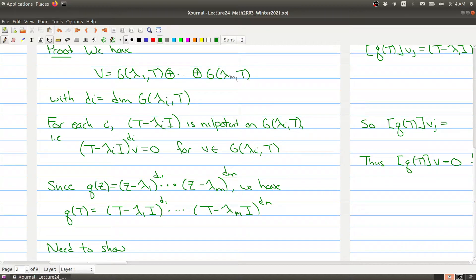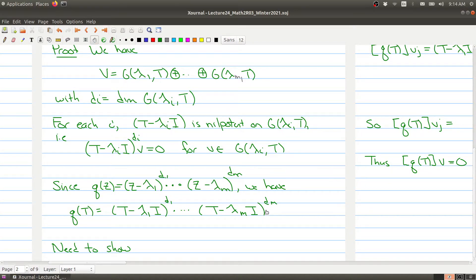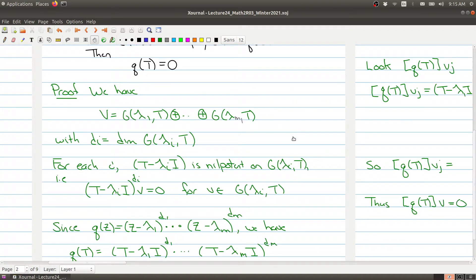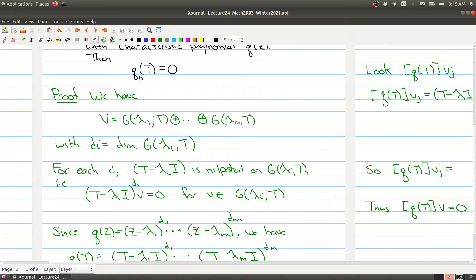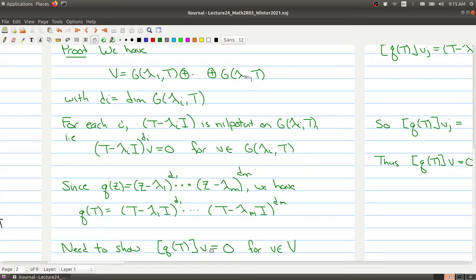We want to take advantage of the fact that each of these pieces are nilpotent on a particular subspace. Our goal is to show that this new operator, when evaluated at v, gives zero for all vectors v in our vector space. That's really what the theorem is saying - this operator is the same as the zero operator. Whenever I plug in v, I should get zero. That's what we need to show.